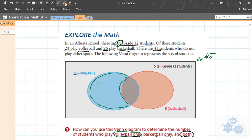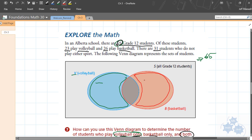If you play basketball only, then you would be over here in this part of the Venn diagram. This is the basketball only section. If you played both, you guessed it, you would be in this section right here. Because you are in the volleyball circle, and you're in the basketball circle at the same time.